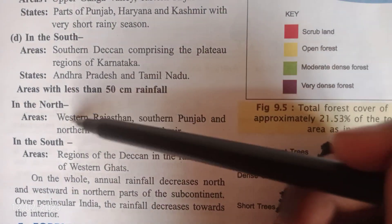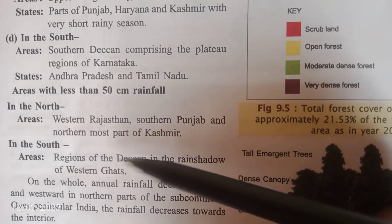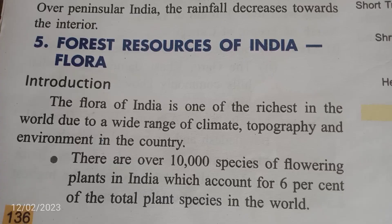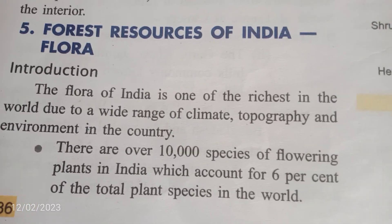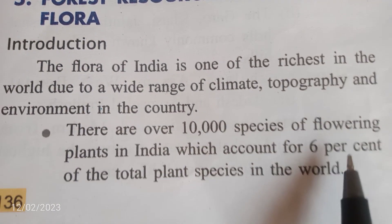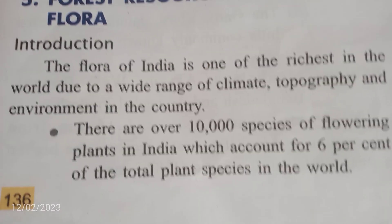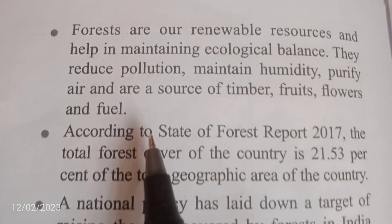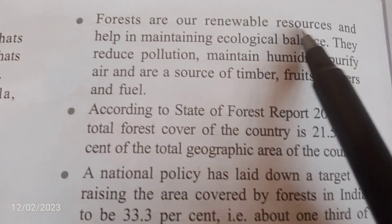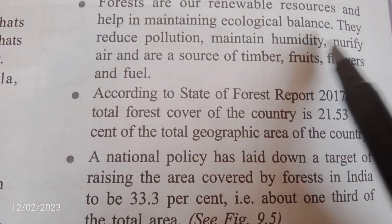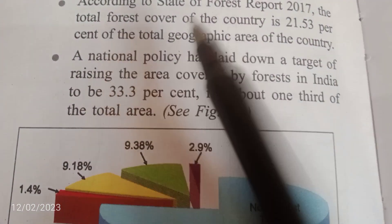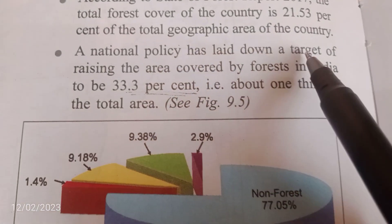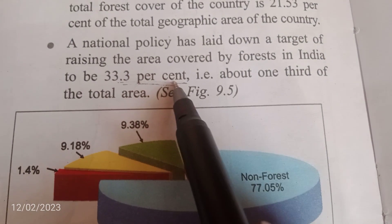Northern India which receives less than 50 centimeters of rainfall includes western Rajasthan, southern Punjab, and northern parts of Kashmir. In south India, the Deccan region in the rain shadow of the Western Ghats receives less than 50 centimeters. Regarding forest resources of India: India's climate, flora, and fauna are among the richest in the world, with over 10,000 species and six percent of the total plant species in the world. Forests are a renewable source of energy that reduce pollution, purify air, and regulate humidity. The national policy has set a target of raising forest cover in India to 33 percent — one third of the total area.